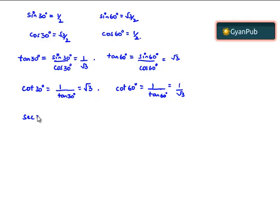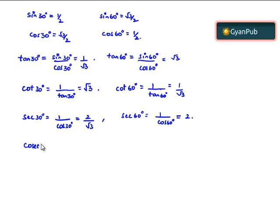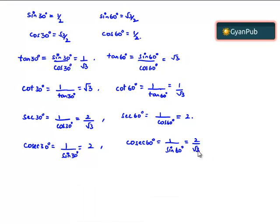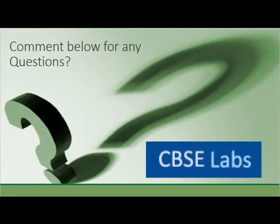Now, let us find sec 30 degrees, that is equal to 1 by cos 30 degrees, which is equal to 1 by root 3 by 2, which is nothing but 2 by root 3. And sec 60 degrees is equal to 1 by cos 60 degrees, which is nothing but 1 by 1 by 2, which is equal to 2. And cosec 30 degrees is equal to 1 by sin 30 degrees, that is nothing but 1 by 1 by 2, which is equal to 2. And cosec 60 degrees is equal to 1 by sin 60 degrees, which is nothing but 1 by root 3 by 2, that is nothing but 2 by root 3. These are the trigonometric ratios of angles 30 degrees and 60 degrees.